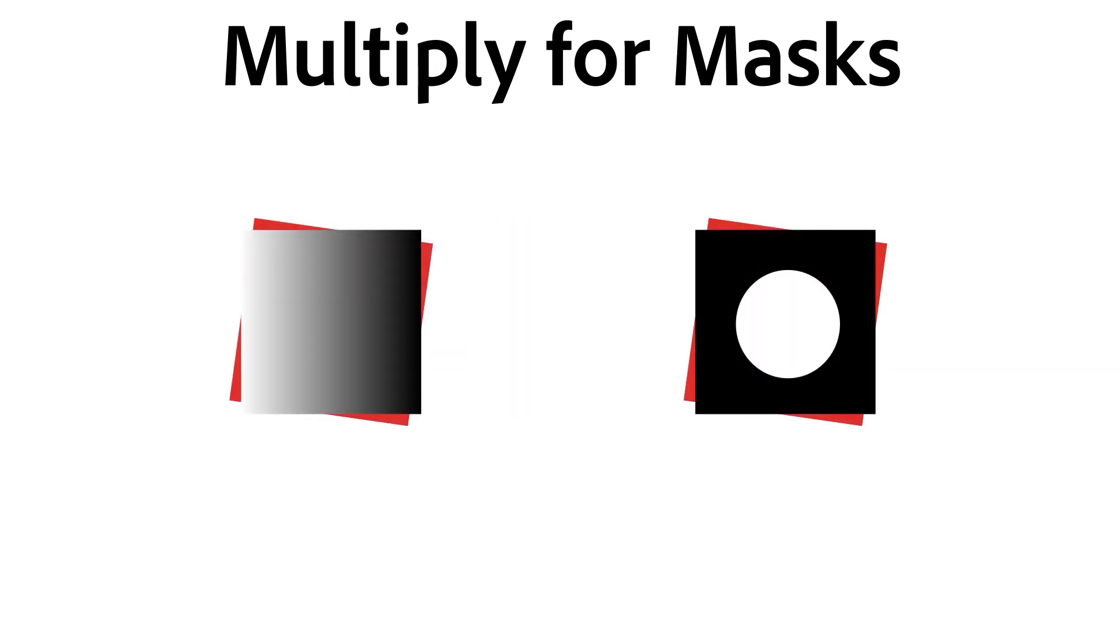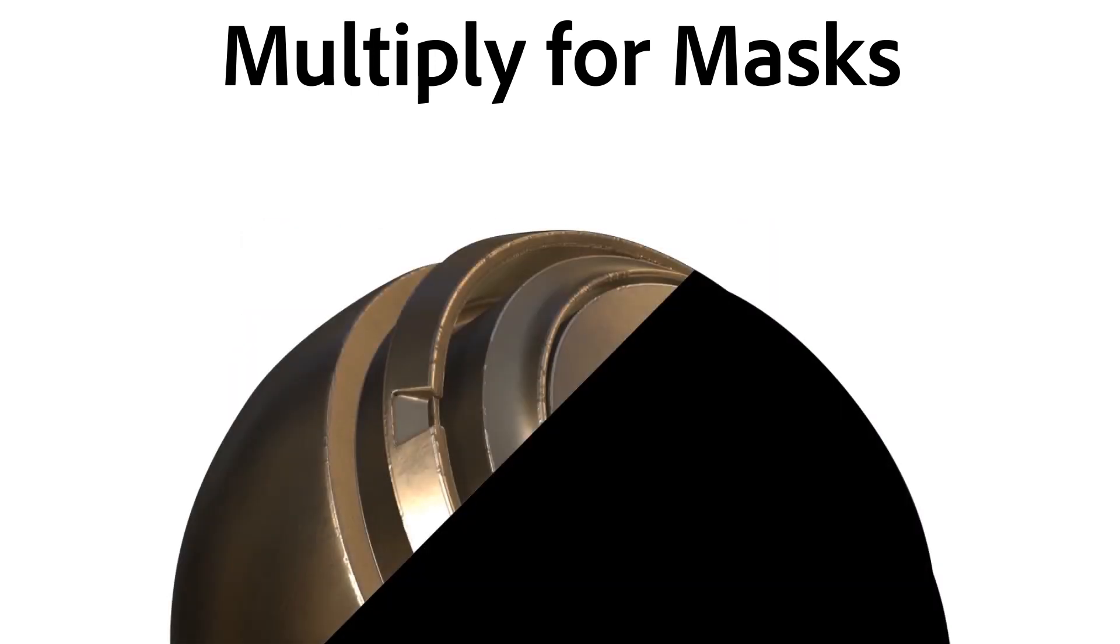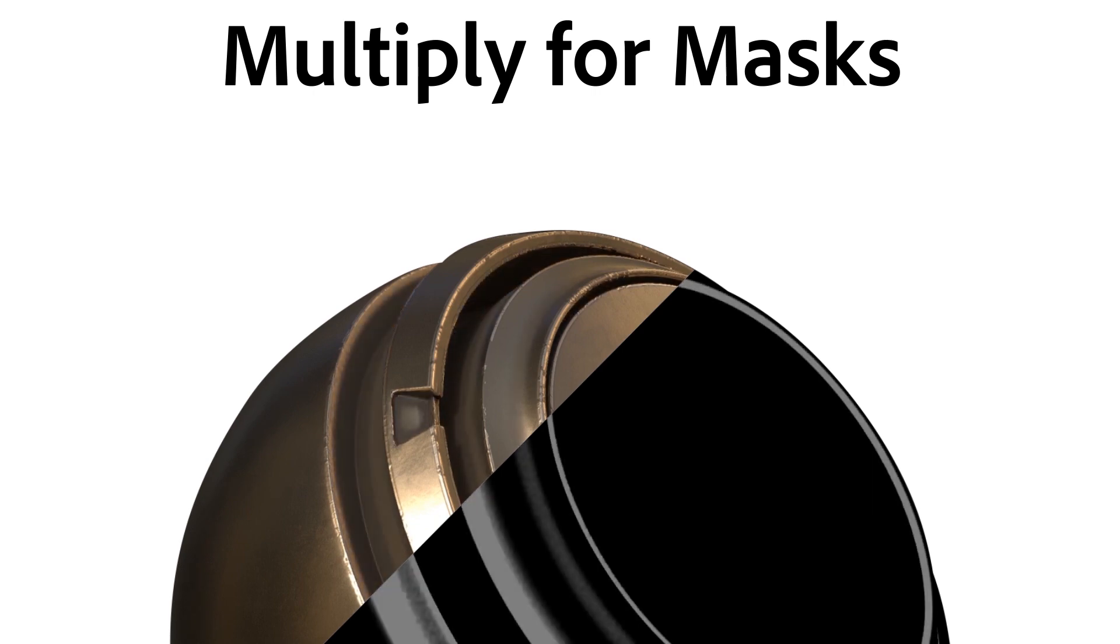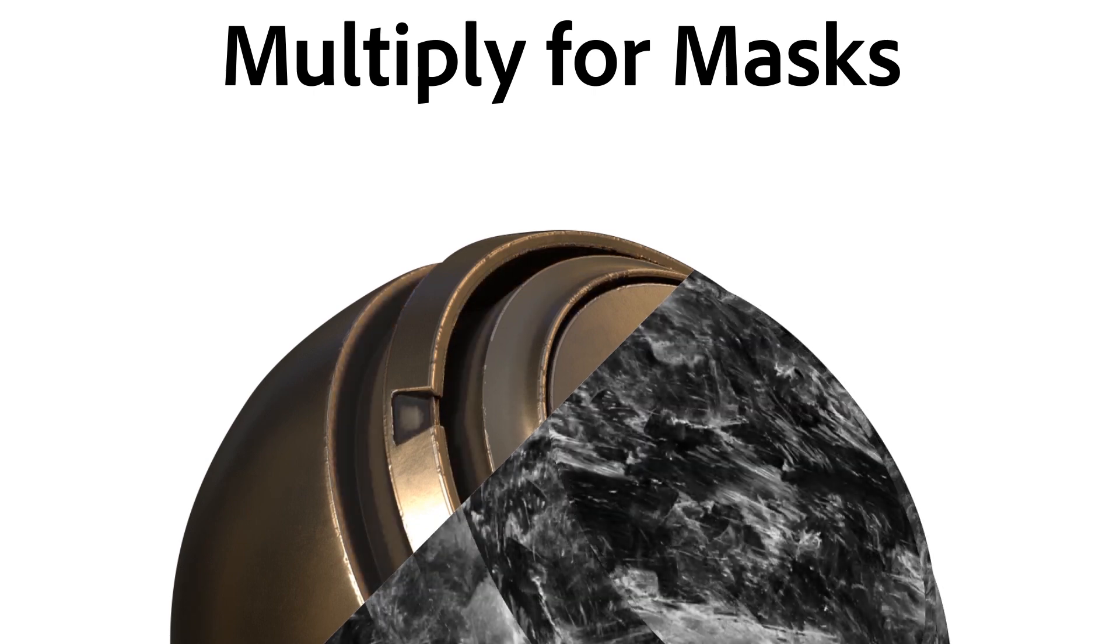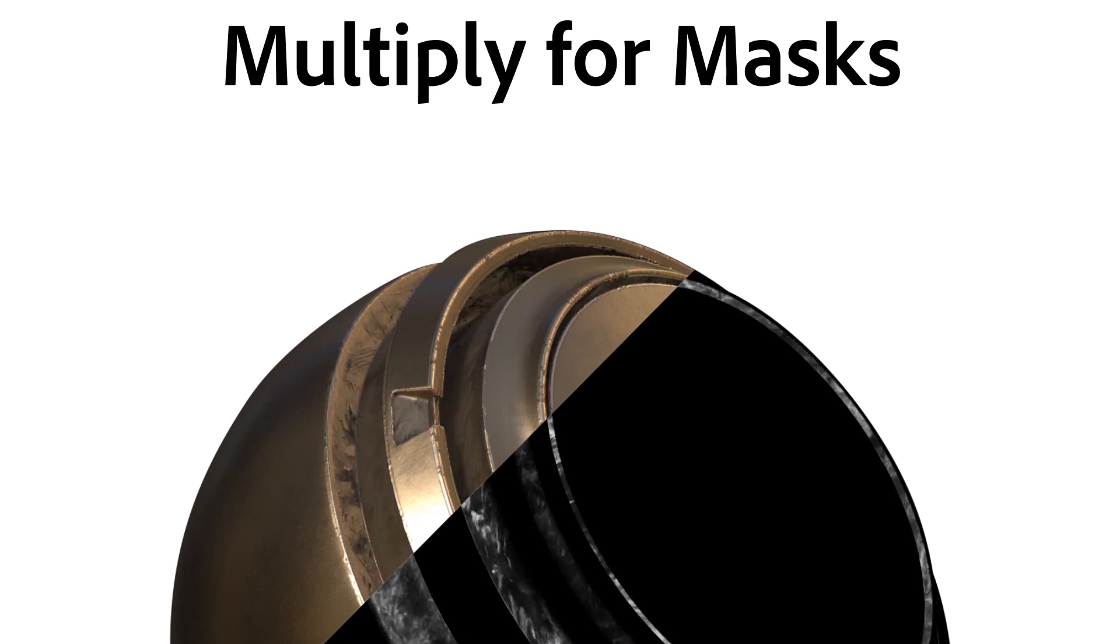Gray values between black and white just become progressively darker the closer to black they are. This makes multiply ideal for combining masks. You can have a specific area masked in one component and a global mask with grunge in the other. Multiply combines those so your grunge is only applied to the specific areas, and to make it even easier, the order doesn't matter.